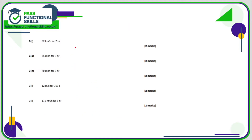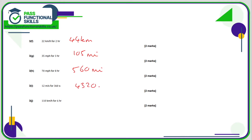22 times 2 is 44 kilometres; 35 multiplied by 3 is 105 miles; 70 times 8 is 560 miles; 12 times 360 is 4,320 metres; and 110 times 6 is 660 kilometres.